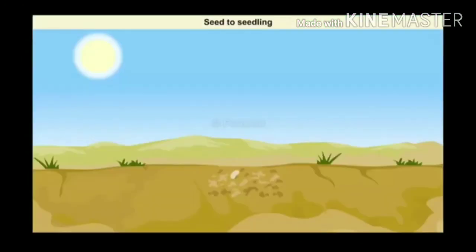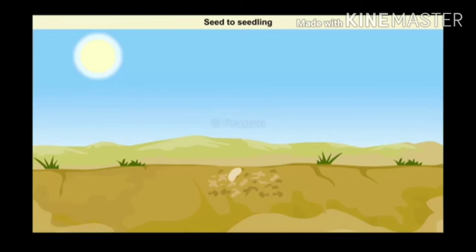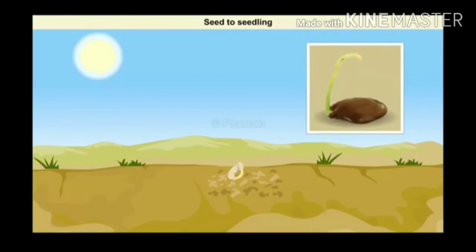The journey of a seed to a seedling passes through many stages of growth. In the early stages, when a seed is placed in moist soil, it absorbs the water around it. The water then reaches the beginning of the baby plant — the embryo within the seed. This makes the embryo grow and increase in size. Eventually, the embryo breaks open the seed coat and comes out of the seed. The root comes out first and grows into the soil.